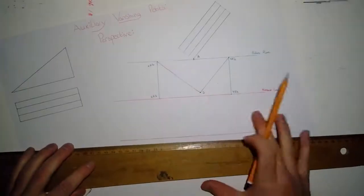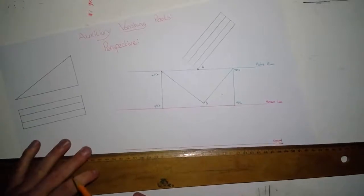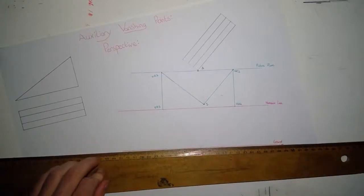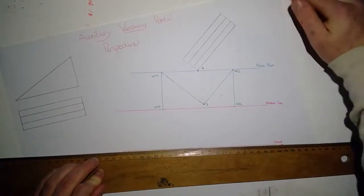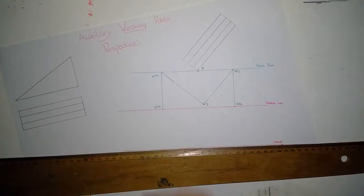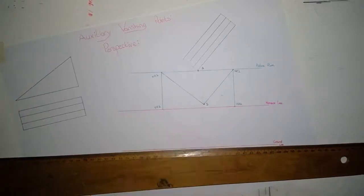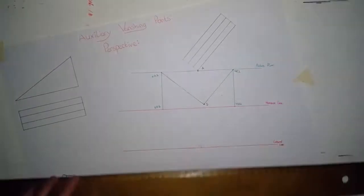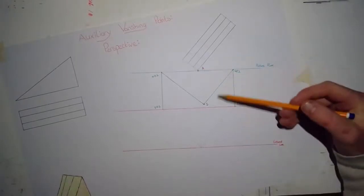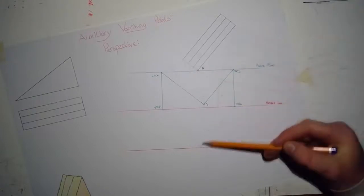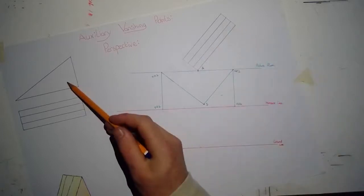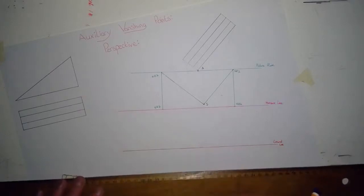There are two different methods for finding auxiliary vanishing points, which is why we need the plan and elevation. I'm going to tape on my sheet with the setup done in line with either the picture plane, horizon line, or ground line of the T-square — that's covered in a previous video. In this question, I already have the setup done and the points on the ground brought down. I'm now focusing on this rising surface here.